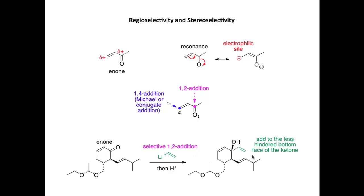We've also got a stereoselective transformation. This alcohol is bonded to a chiral carbon, and the vinyl group is drawn pointing away from us while the alcohol group points towards us. In the reaction, the vinyllithium adds to the less hindered bottom face of the ketone. We only form one isomer — in this case, one diastereoisomer — and as a consequence this is a stereoselective nucleophilic addition.